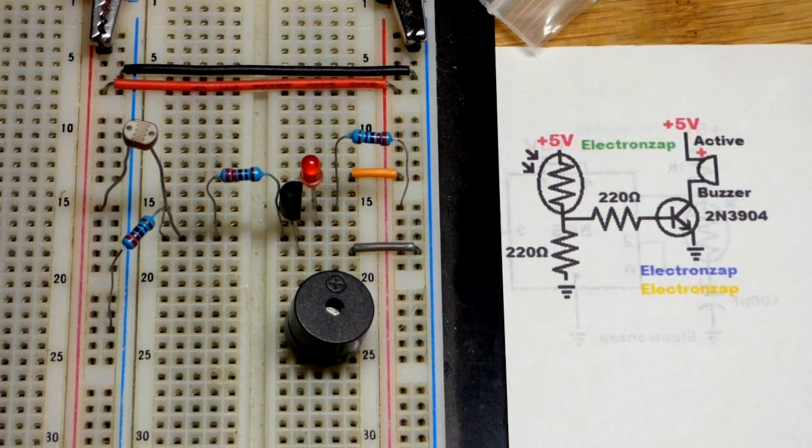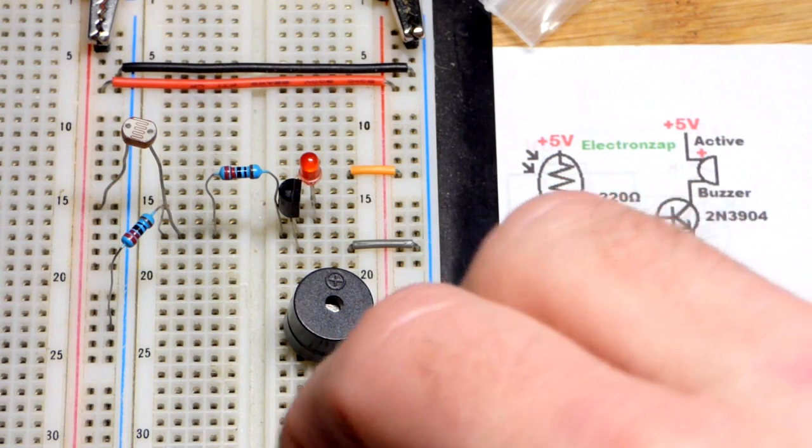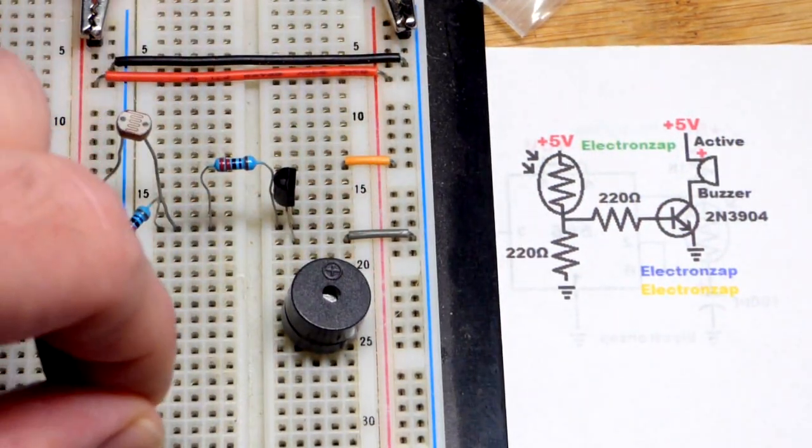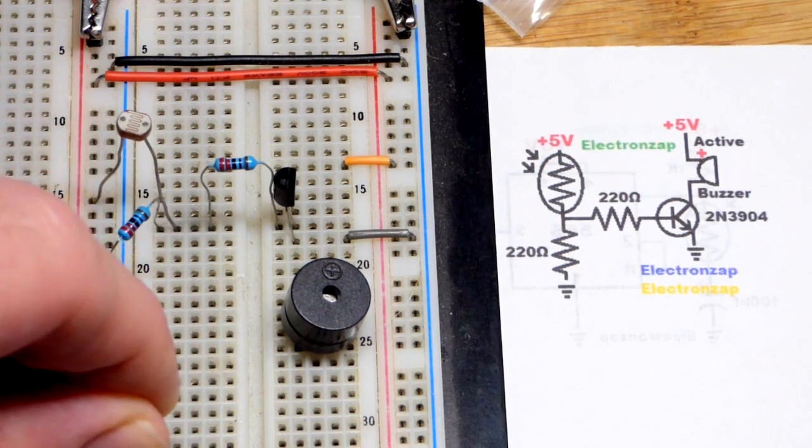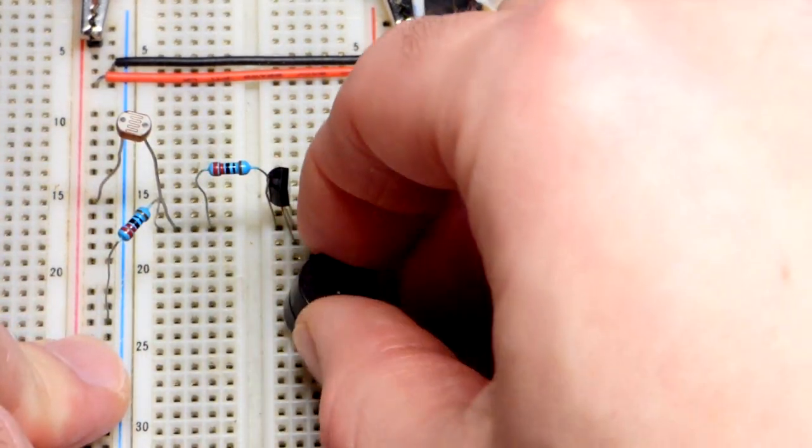So all we have to do is swap the red LED for an active buzzer. Of course the LED needs a protective resistor, but the active buzzer we can just connect to the power supply and the transistor is a switch to turn it on and off.